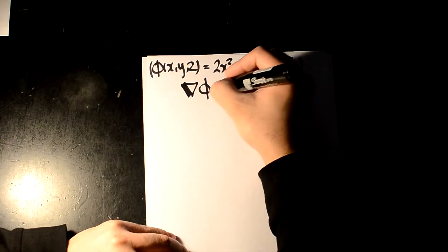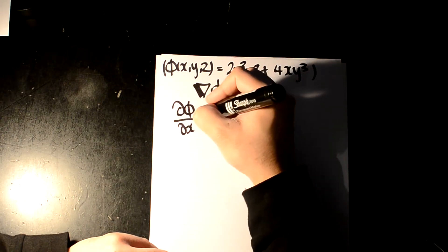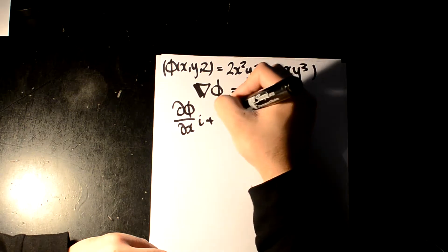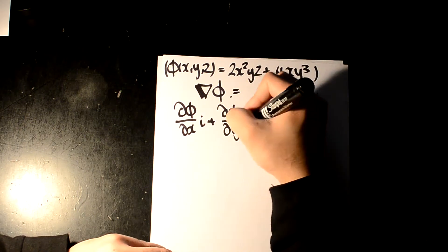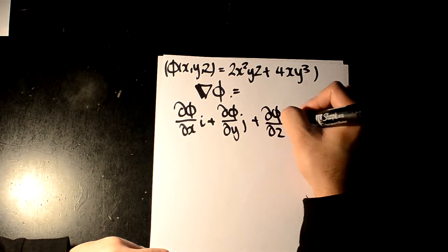So the way they want you to do this is d phi over dx, i, plus d phi over dy, j, plus d phi over dz, k.